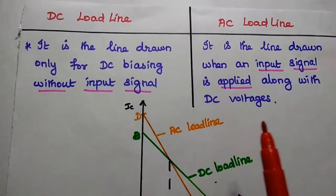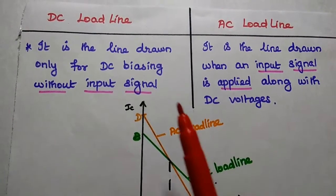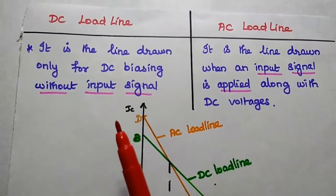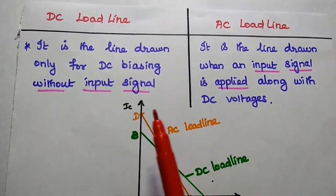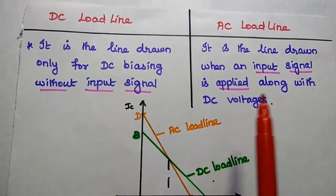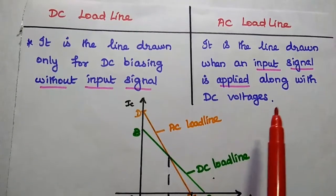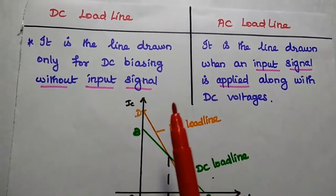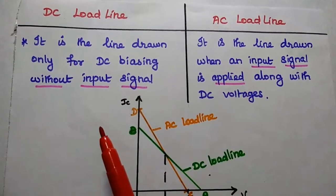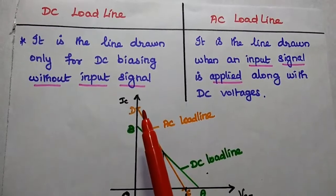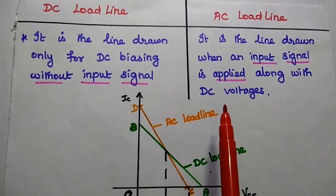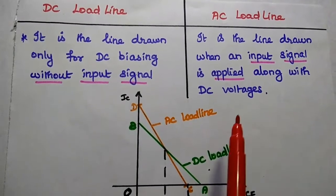There are two types of load lines: DC load line and AC load line. The DC load line is the line drawn only for DC biasing without any AC input signal. The AC load line is the line drawn when an AC input signal is applied along with the DC voltages. This is the major difference between AC and DC load lines.